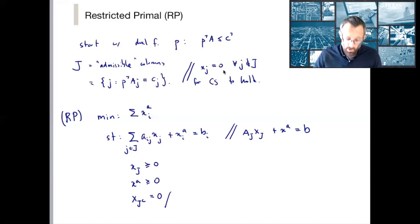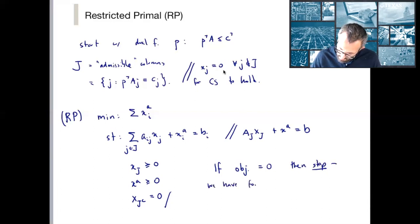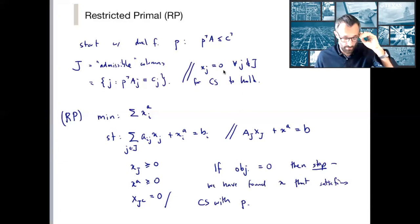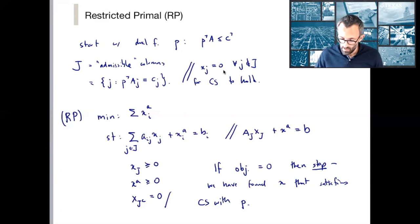Note that if the objective of the restricted primal equals zero, then stop: we have found an x that satisfies complementary slackness with our dual variable p, and we're done. We're interested in understanding what happens when this is not the case. If we solve the restricted primal with the simplex method, we also solve its dual, so let's write out what that dual is.